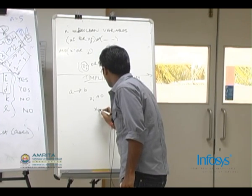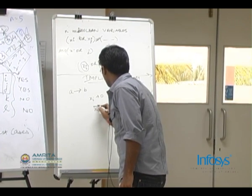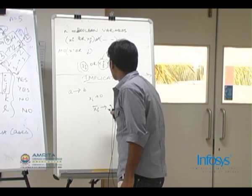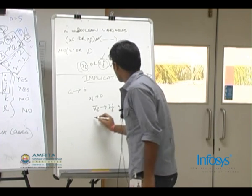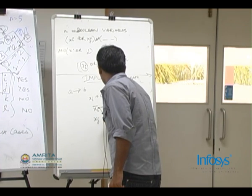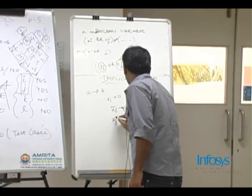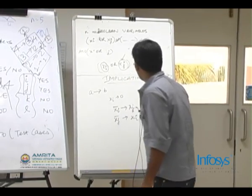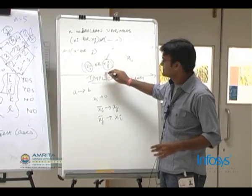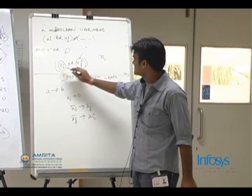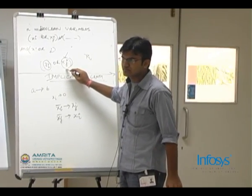Which means XI complement implies XJ and XJ complement implies XI. If XI is false then XJ has to be true.